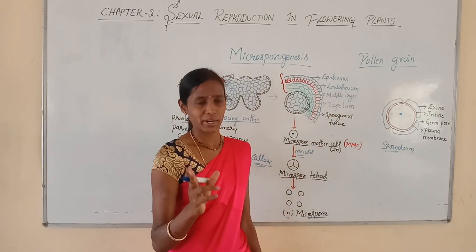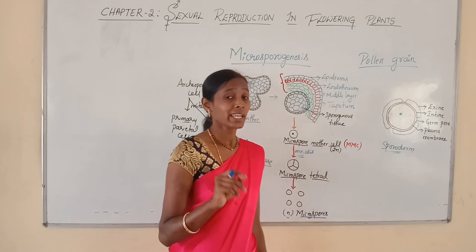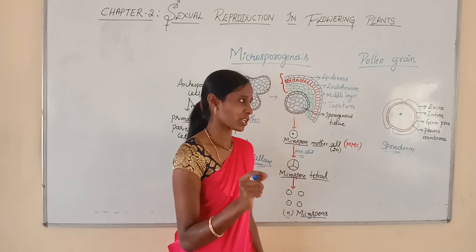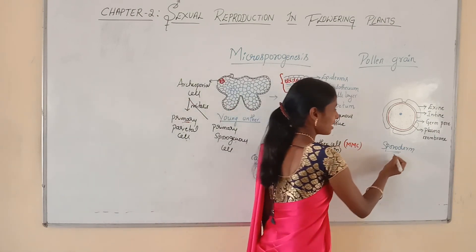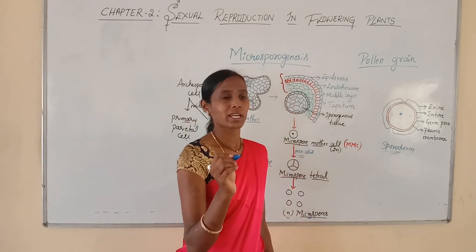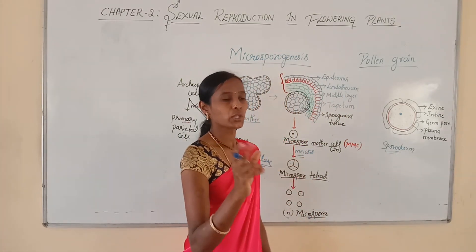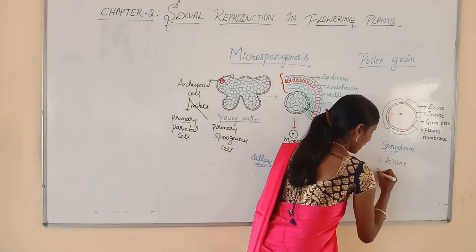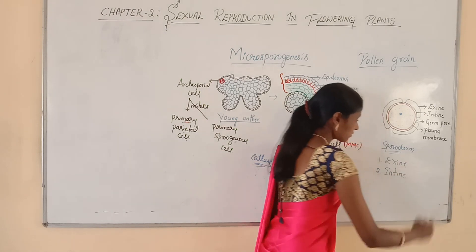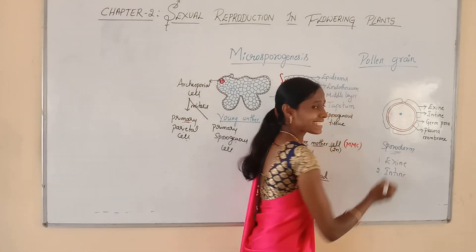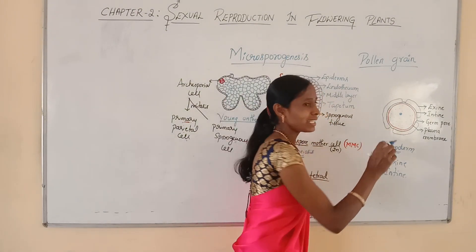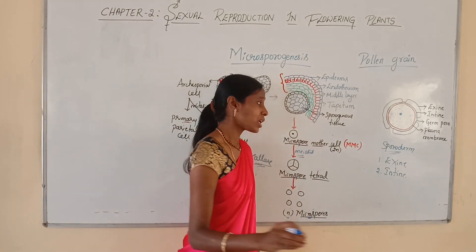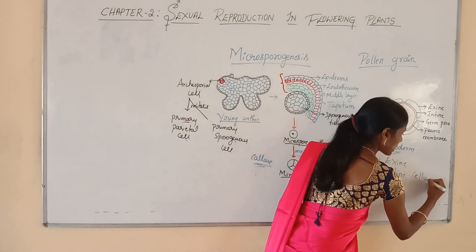The wall or covering of the pollen grain is called the sporoderm, which is usually two-layered. One is called the exine and the other is called the intine. The intine is usually thin, smooth, and a continuous layer, which is made up of cellulose and pectin.